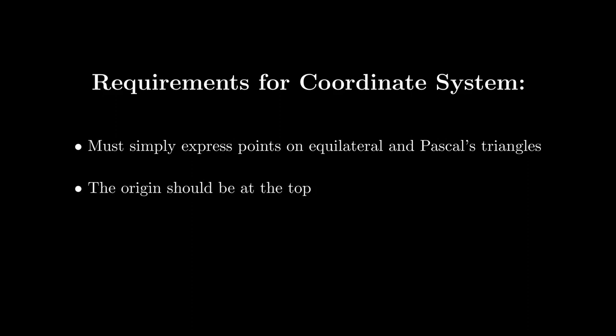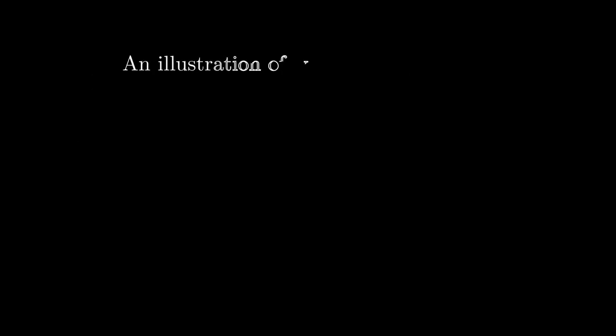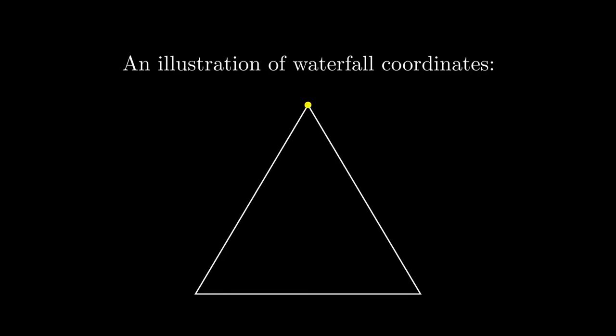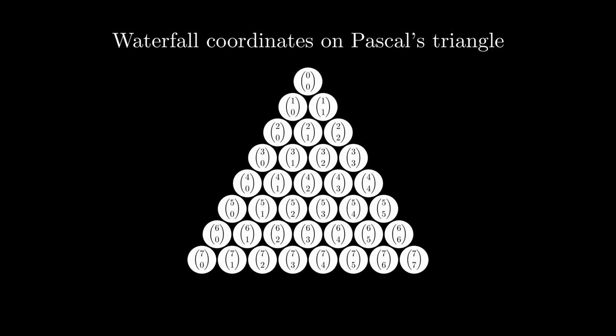We need a new coordinate system. This coordinate system should put the origin at the top of Pascal's triangle, since we build Pascal's triangle from the top down. At the same time, it should retain some ideas for barycentric coordinates, since they work so well with equilateral triangles. This compromise gives us the idea for what I call waterfall coordinates. The following is an illustration describing how waterfall coordinates work. As you can see, the waterfall coordinate MN is given by starting at the top, moving parallel to the left side M units, and then moving parallel to the right side N units. Waterfall coordinates also work well with Pascal's triangle, as you can see.